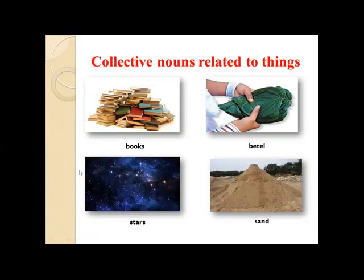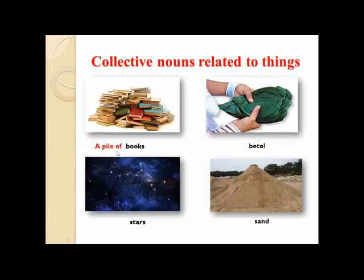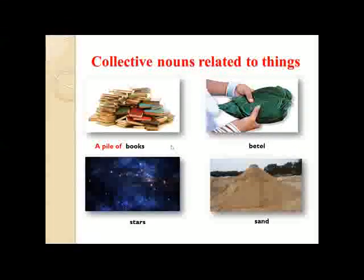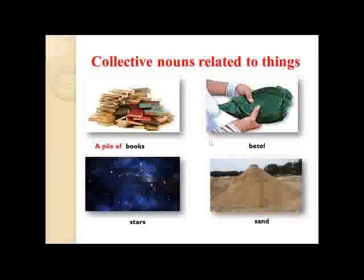You can see some books, so there are several books for a set of books — we call it a pile of books. Look at the next picture. What can you see there? Yes, you know that they are beetles, so we call it a swarm of beetles.